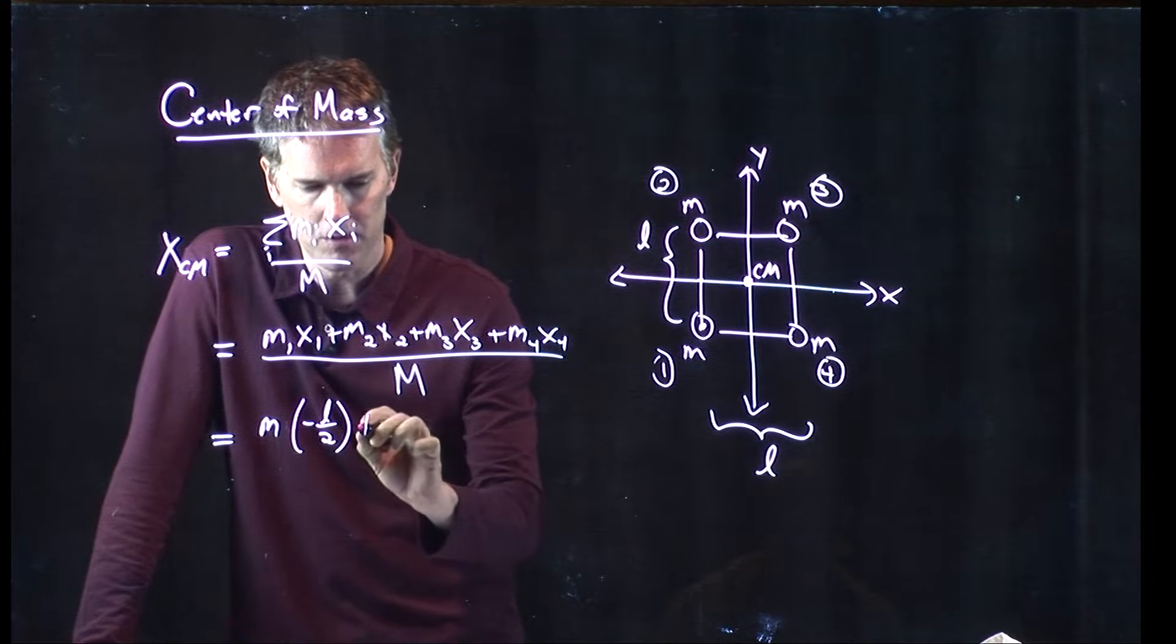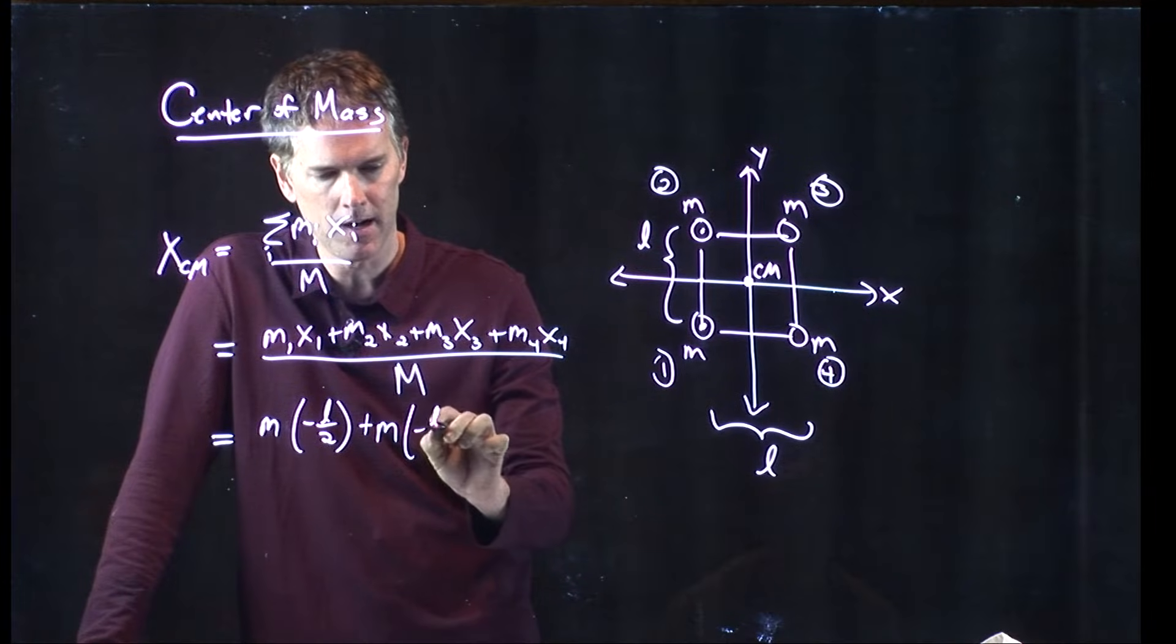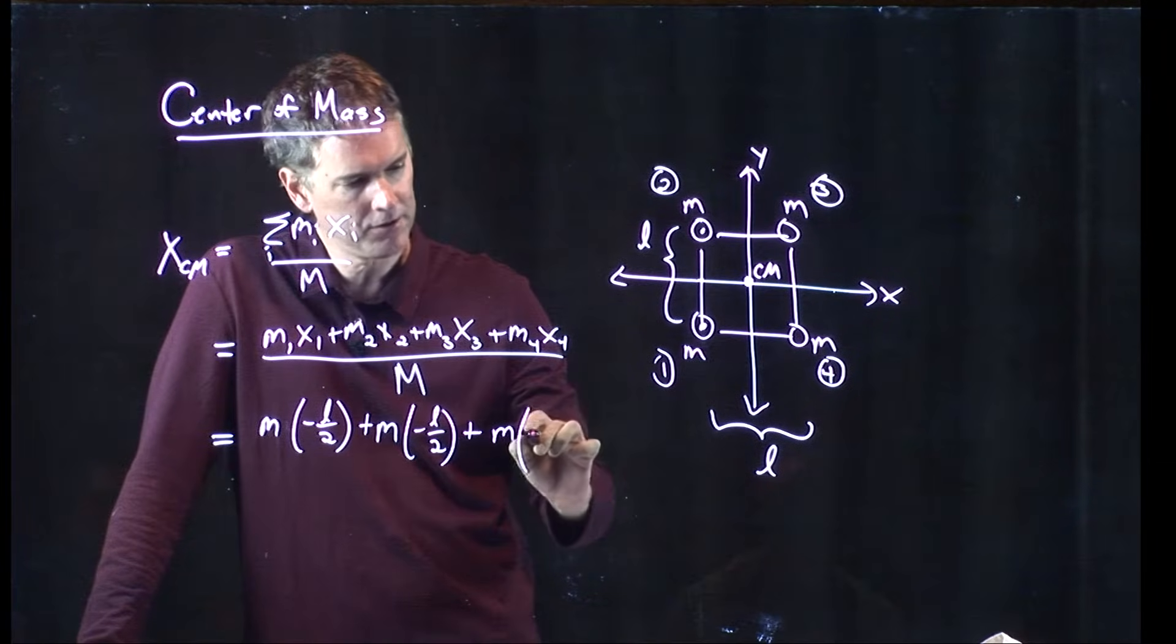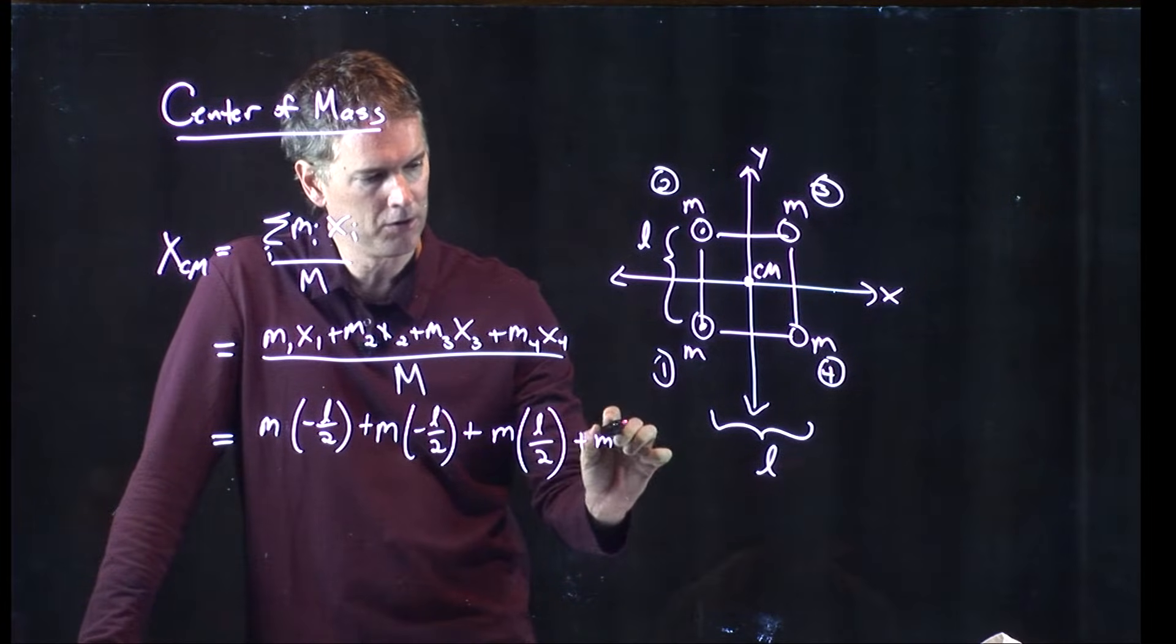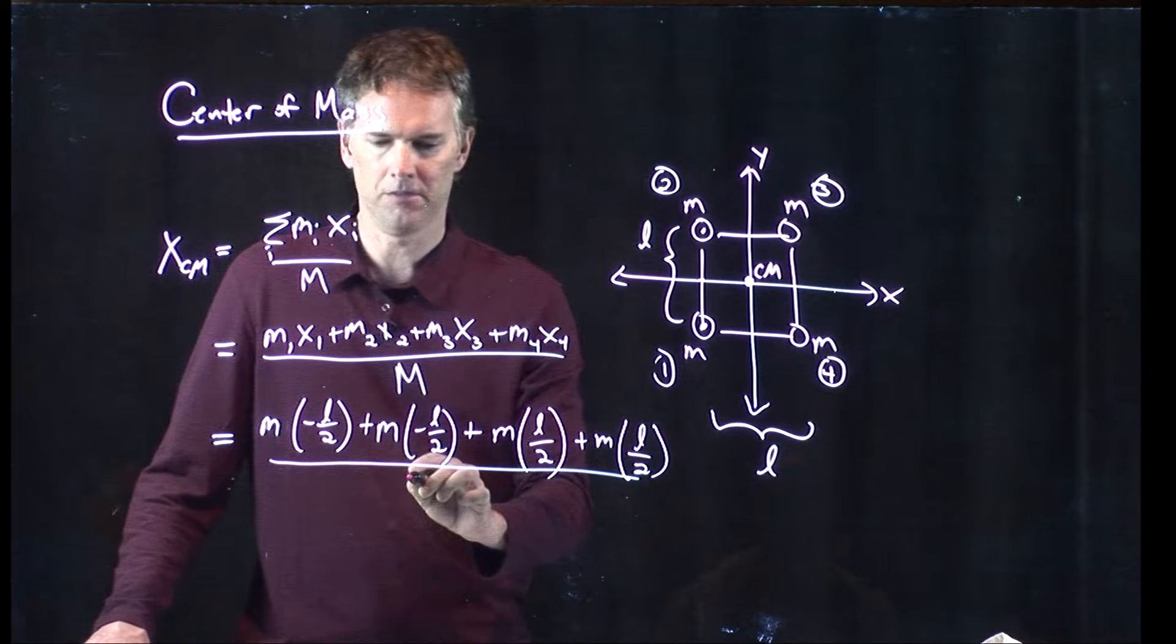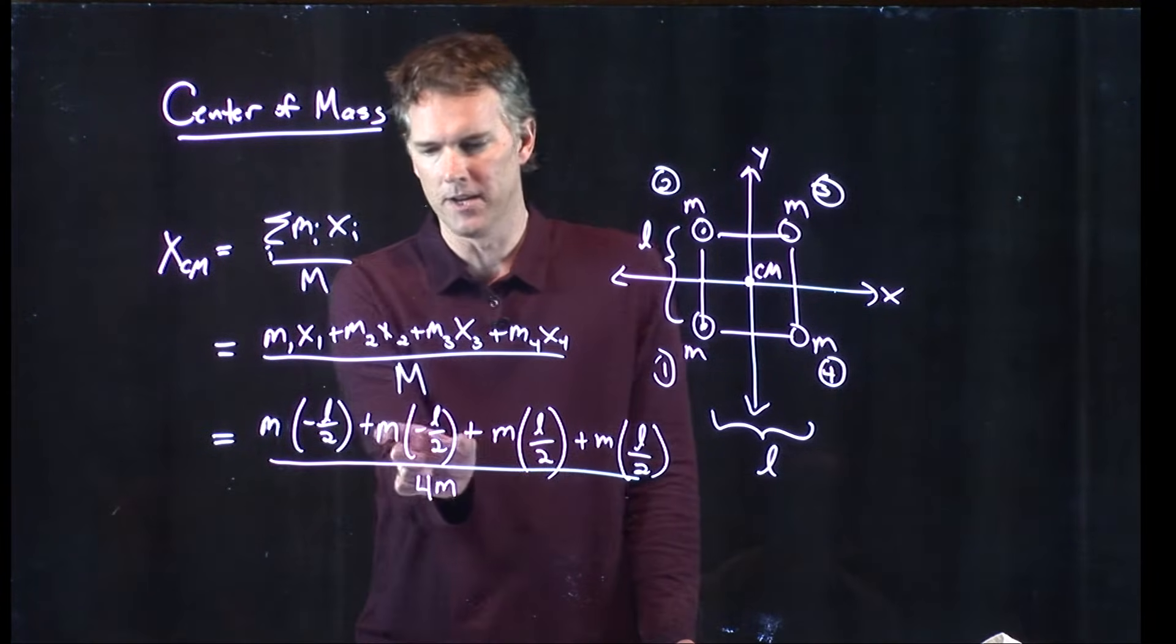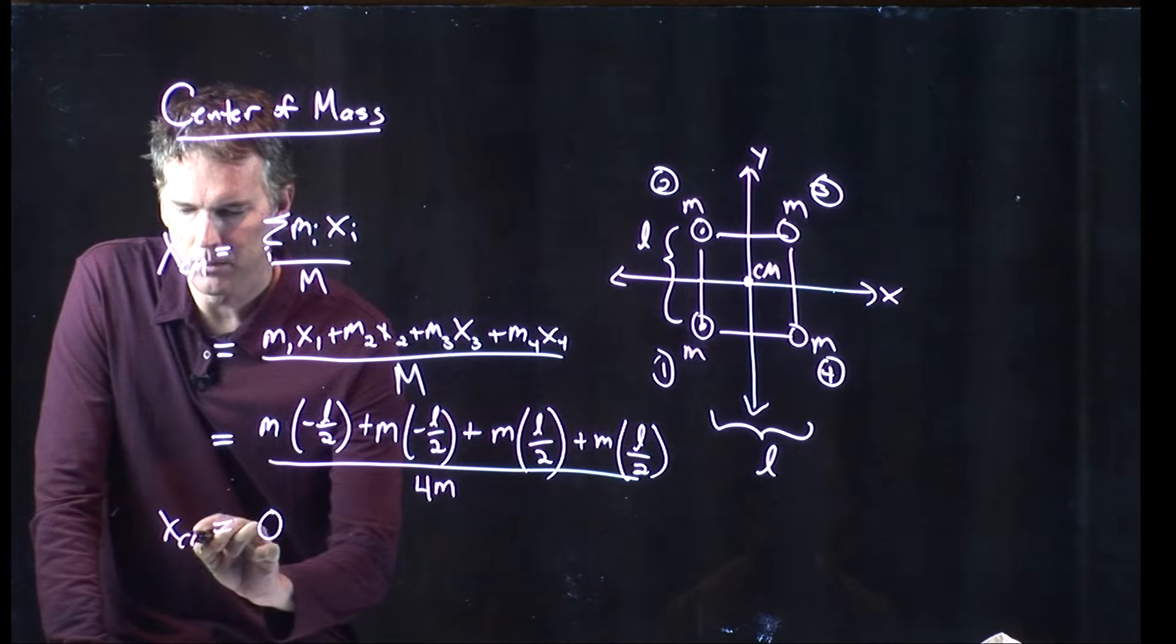M2, which is also the mass m, that also has an x position of negative L over 2. M3 has an x position of positive L over 2. X4 is also positive L over 2. And we're going to divide this thing by the total mass of the system, which is just 4m. And now you see what happens. Right? We have a negative there that cancels with the positive there. We have a negative there that cancels with the positives there.